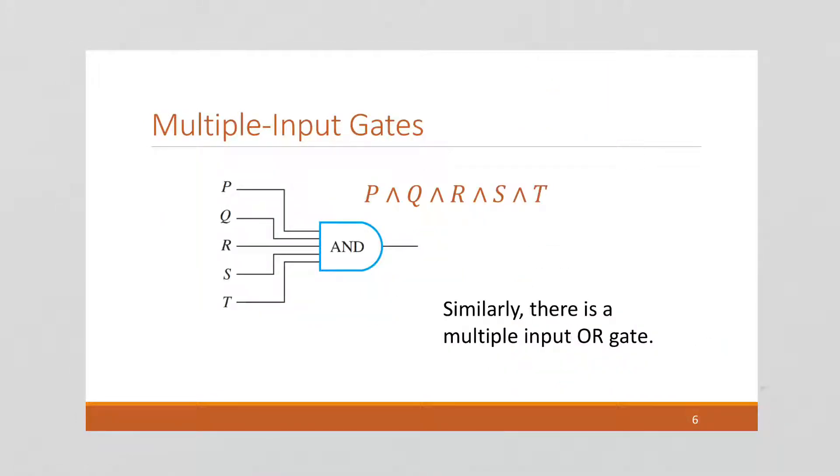We can also do multiple input gates. We can have many inputs all going into an AND, which requires them to all be ANDed together. Similarly, there's a multiple input OR gate.